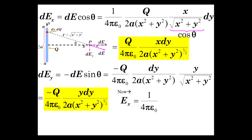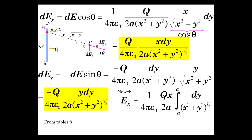Now let's look at the electric field in the x direction — integrate dEx. We bring out the constants and evaluate the integral from minus a to a of dy over (x squared plus y squared) to the three-halves. The x value is constant throughout the integration, so we can bring it out. From tables, we see this form — note that x and y are transposed. Here a is the constant, over here x is the constant, and x is the variable. This form has the result: 1 over the constant squared times variable over the square root of variable squared plus constant squared.